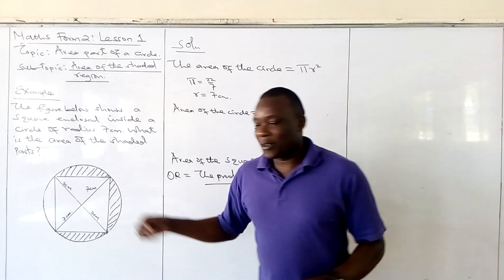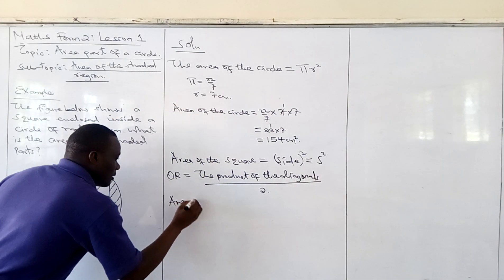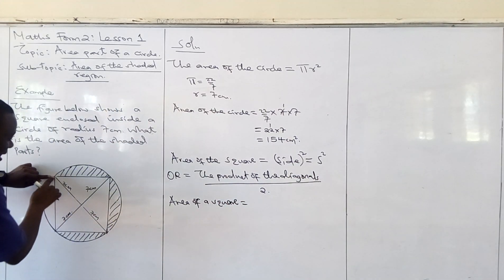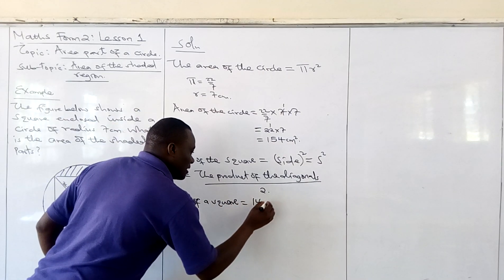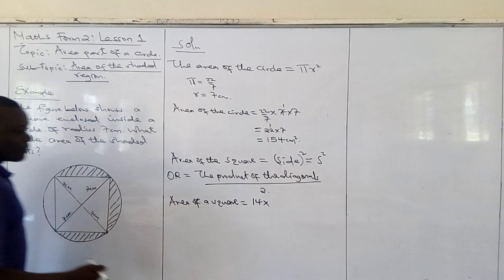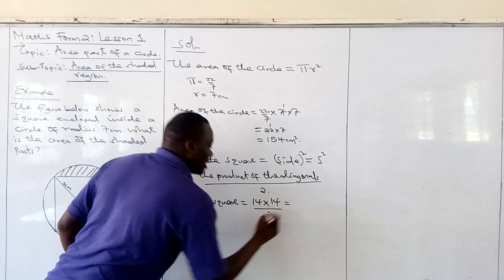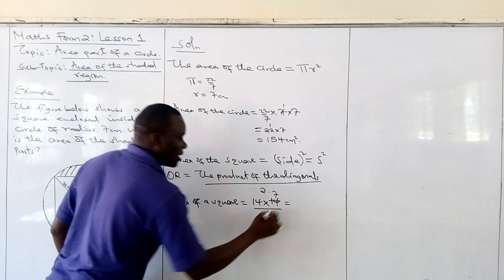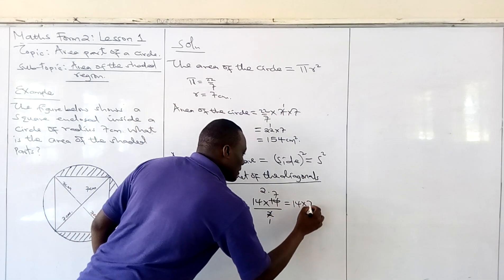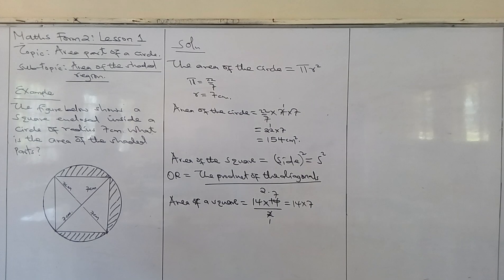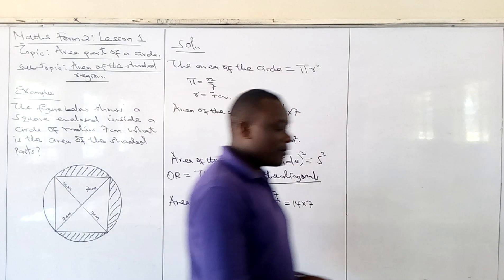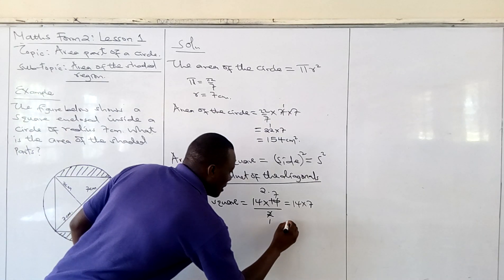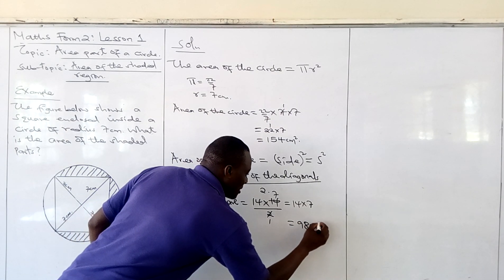So we can now say the area of a square is equal to the first diagonal, which is 7 plus 7 giving us 14, times the other diagonal, which is also 7 plus 7 giving us 14, then divided by 2. Two goes into 14 seven times, so we have 14 times 7. 14 times 7 gives us 98, so the area of the square is 98 centimeters squared.